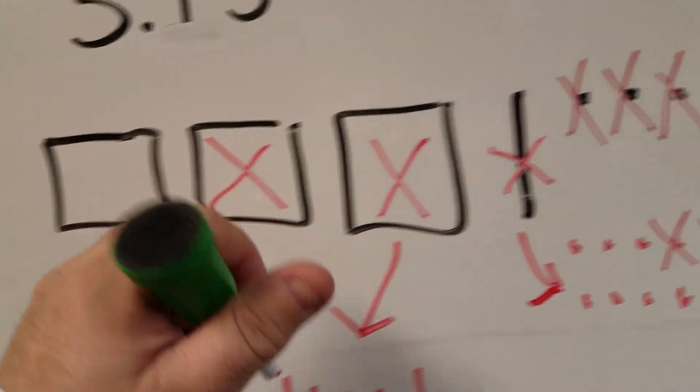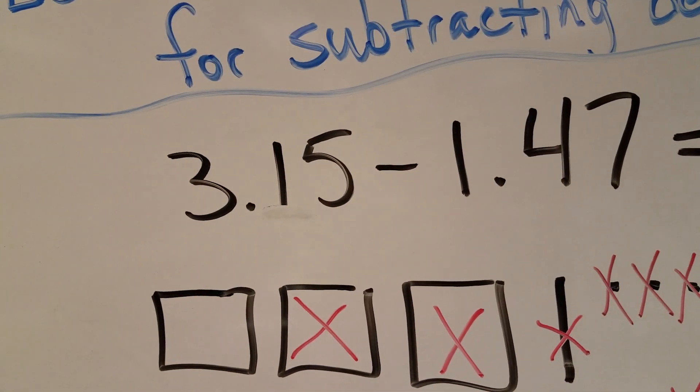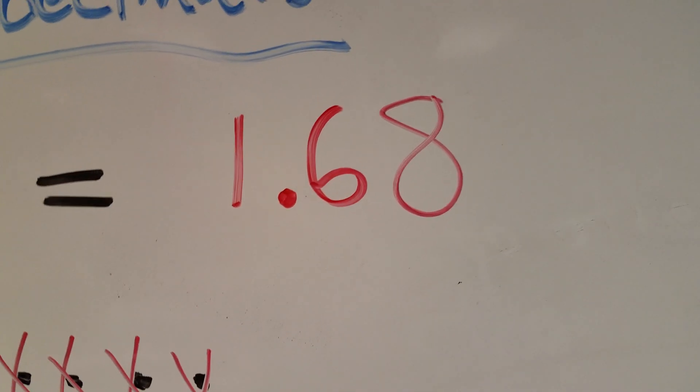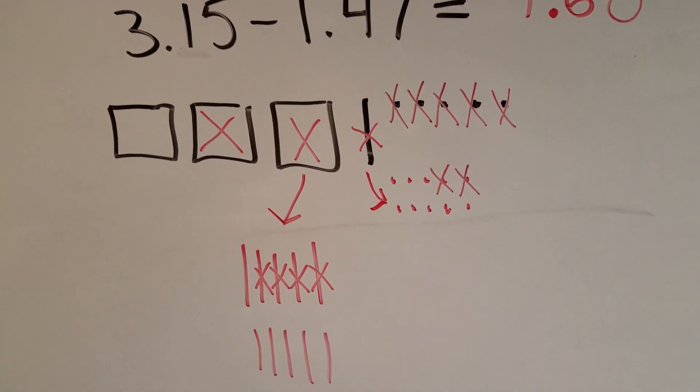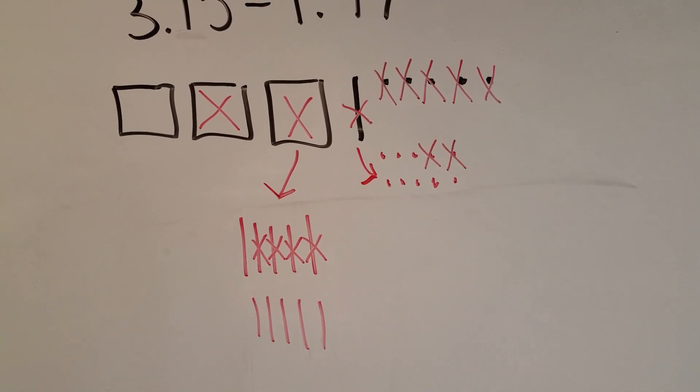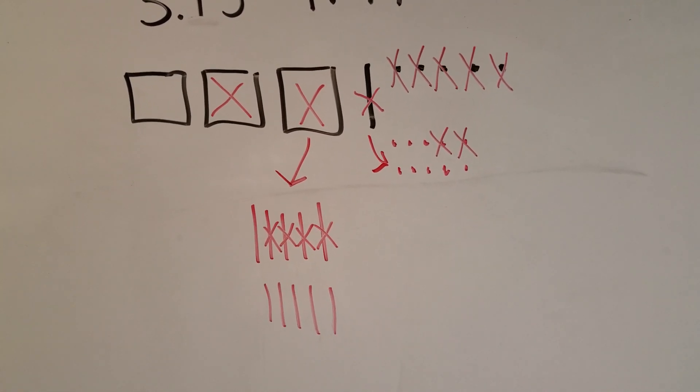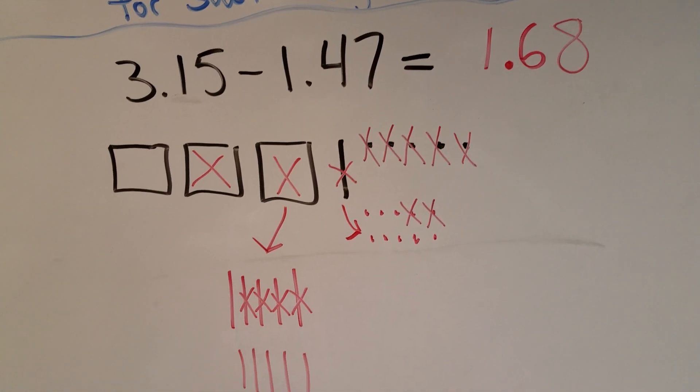I have one whole left. So my answer to three and fifteen hundredths minus one and forty seven hundredths is one and sixty eight hundredths, and you can see there's my original. The black is the original three and fifteen hundredths. The red is basically taking those away, breaking them up and taking one and forty seven hundredths away.